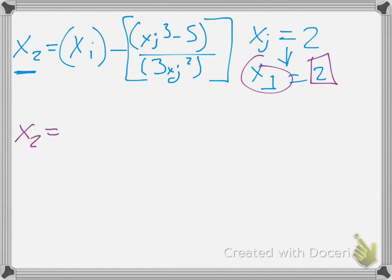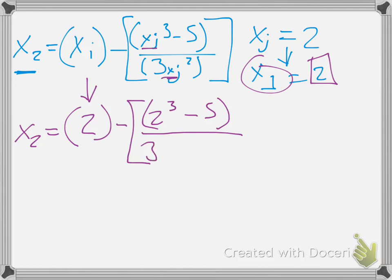So let's do that, x_2 equals x_i, 2 minus, right here, 2 cubed minus 5 over 3 times x_i, 2 squared, 3 times 2 squared. All right, so now let's just start evaluating this.